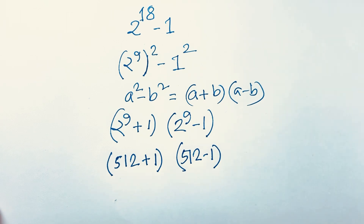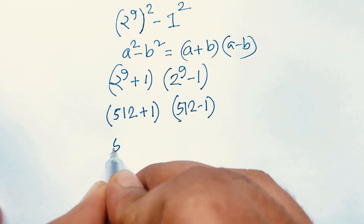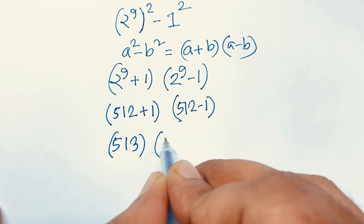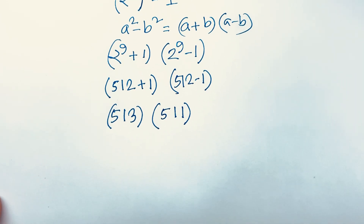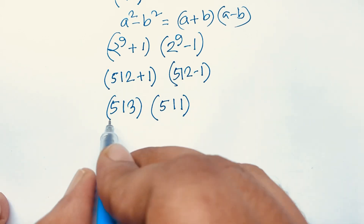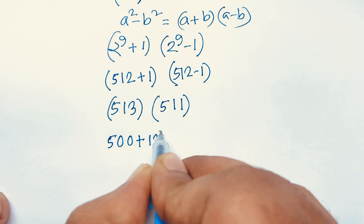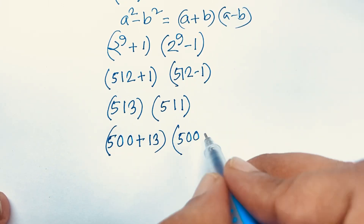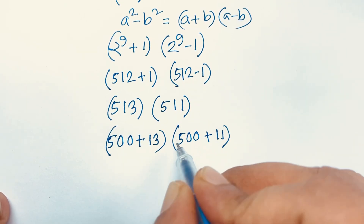So we have (512 + 1)(512 − 1), which is 513 times 511. I can rewrite this as (500 + 13)(500 + 11) to make the multiplication easier.